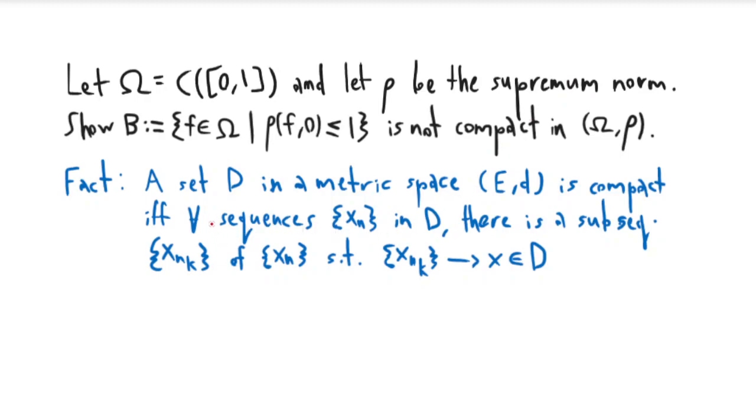To prove this we have the following fact: in any metric space, a set is compact if and only if it's sequentially compact. Meaning that for any sequence contained in the set, it has a subsequence that converges to a limit that's in the set.